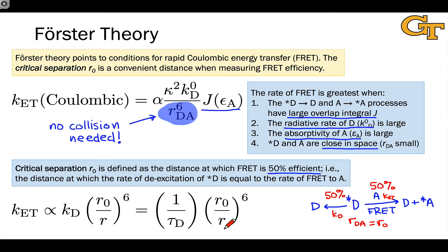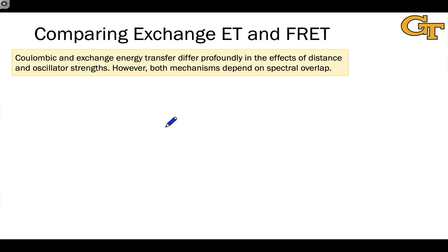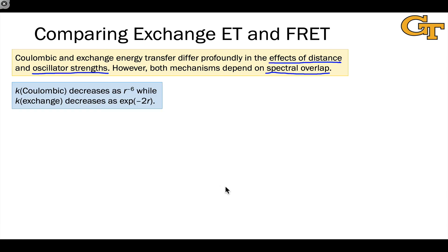Finally, let's compare exchange energy transfer and FRET, noting similarities and key differences. The main difference is in the effect of distance between donor and acceptor on the rate constant of energy transfer. Differences in the oscillator strengths associated with the D→D-star and A→A-star transitions also have a differential impact on exchange energy transfer versus FRET. The main similarity is that spectral overlap is still required — a key condition of energy transfer noted in the introduction to this topic. In summary: the rate of FRET decreases as R to the negative sixth, while the rate of exchange energy transfer decreases as e to the negative 2R.